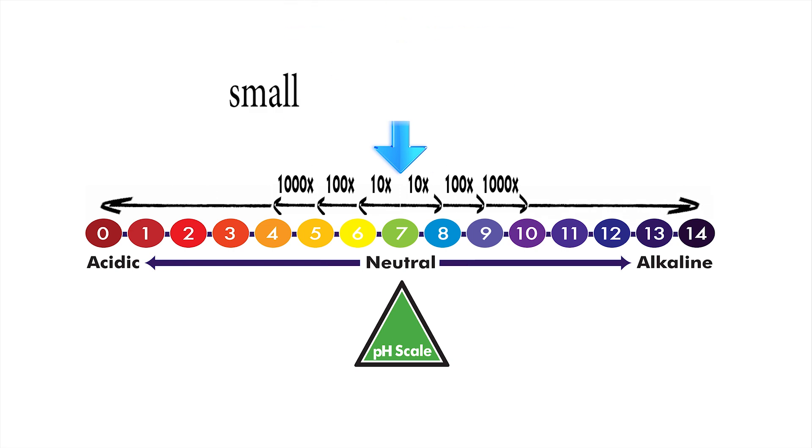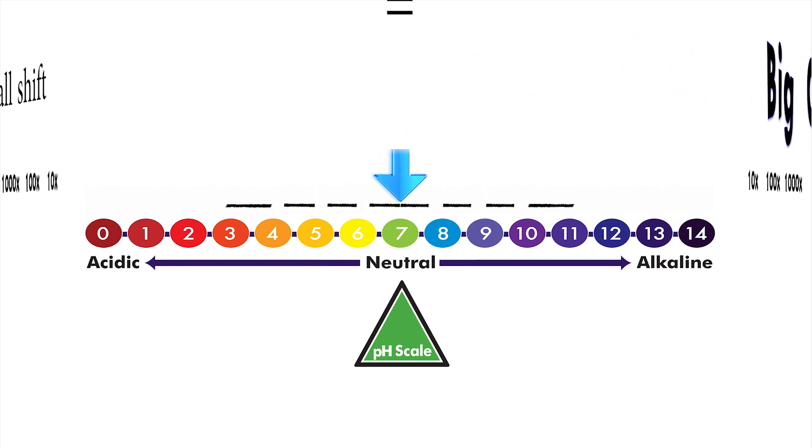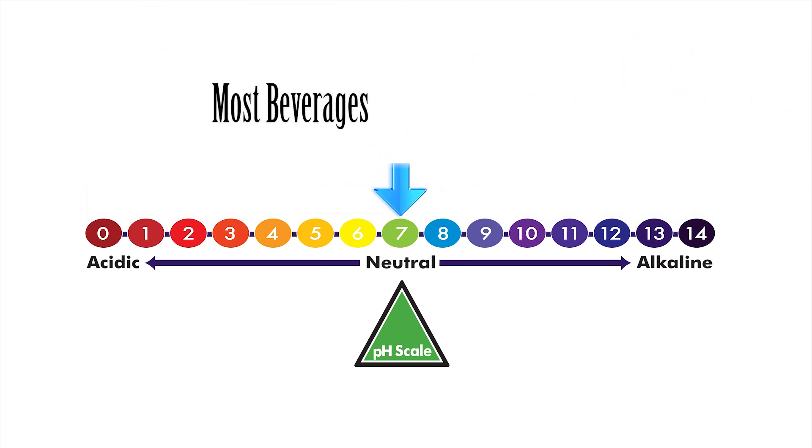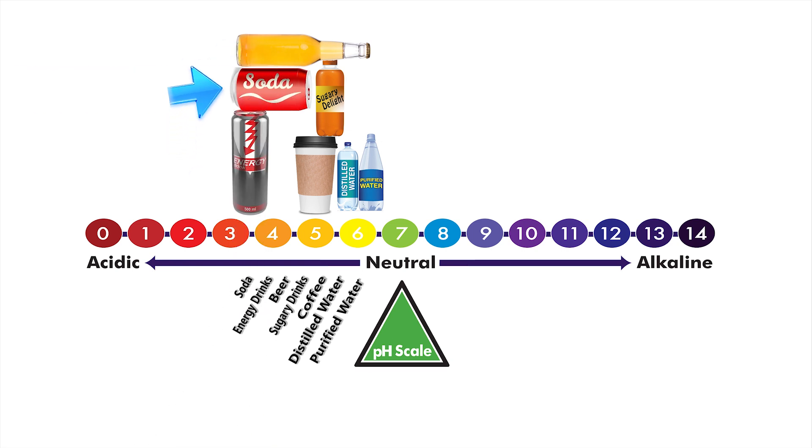The main point is that a small shift means a big change. To give you an idea where things rank, most beverages are acidic and fall between 3 and 6. For example, purified and distilled water are around a 6, while coffee and sugary artificial drinks are around a 5. Alcohol is around a 4, while energy drinks and soda are around a 3, next to stomach acid at a pH of 2.5. Anything lower than this in large quantities can be lethal.